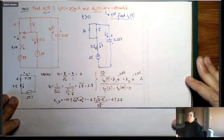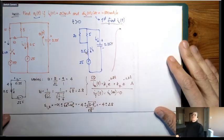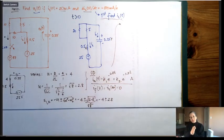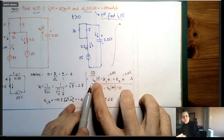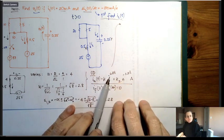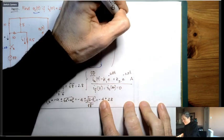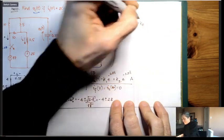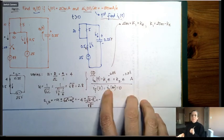Next, we find k1 and k2 using the initial conditions — this comes from the same method used in differential equations. Evaluating IL(t) at t = 0: since e^0 = 1, we get k1 + k2 = IL(0) = 20 milliamps. So k1 = 20 milli − k2. Then I take the derivative and evaluate at t = 0.